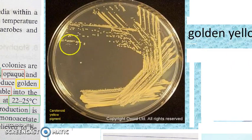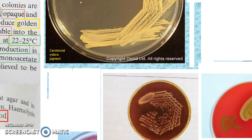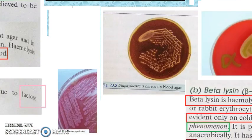You can learn all these colony shapes — you might need it: circular, smooth, convex, opaque, 2 to 4 mm in diameter, etc.